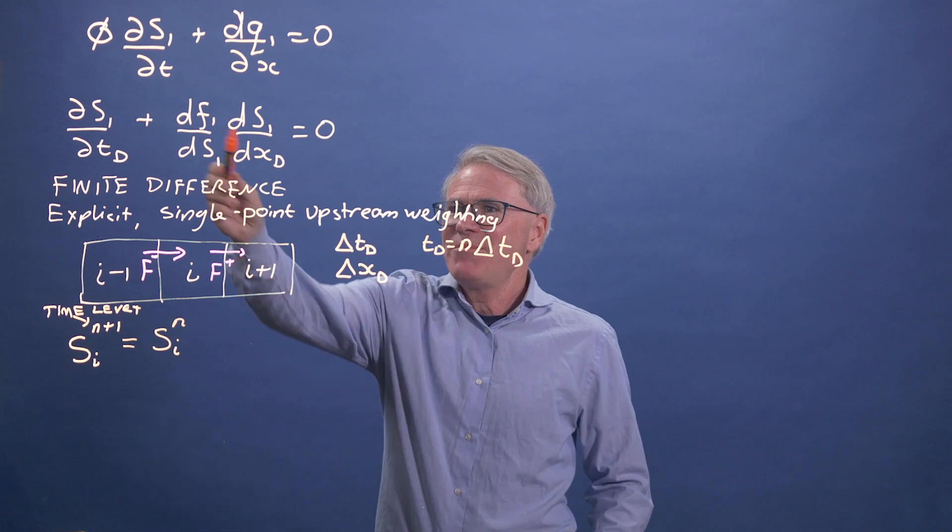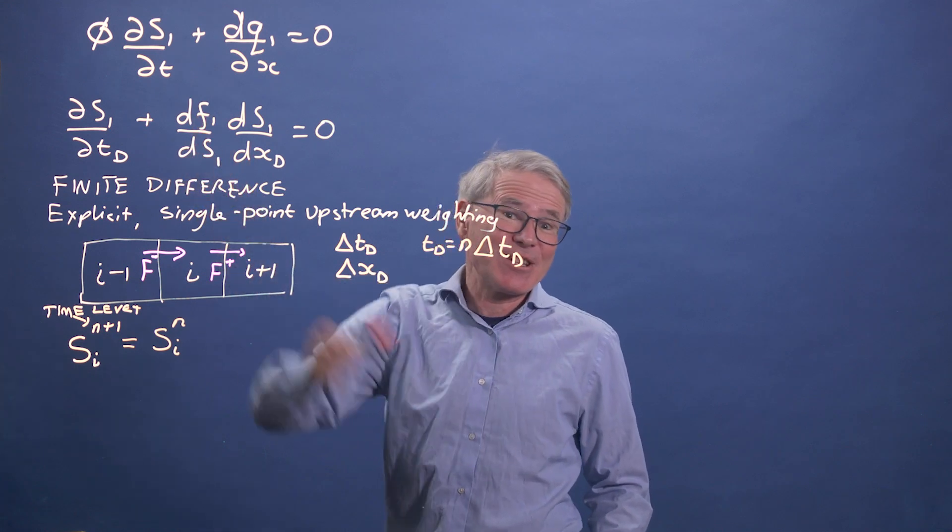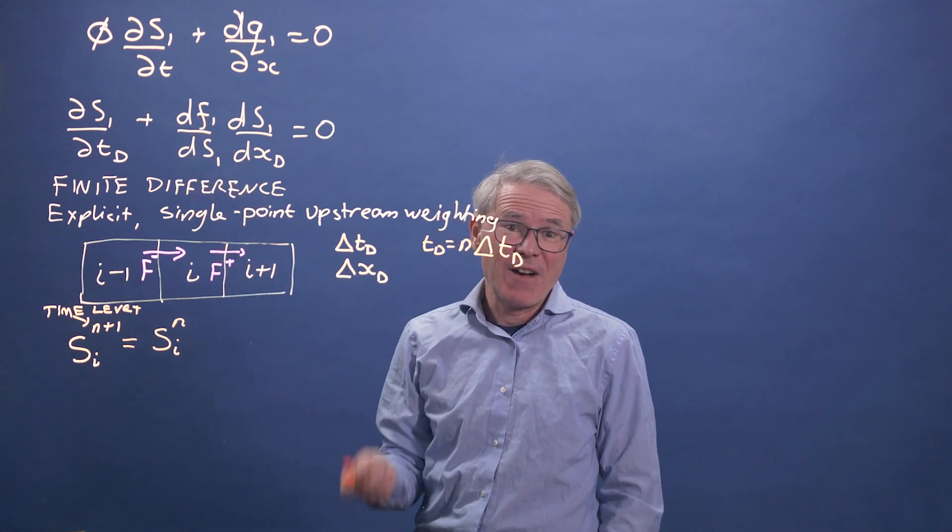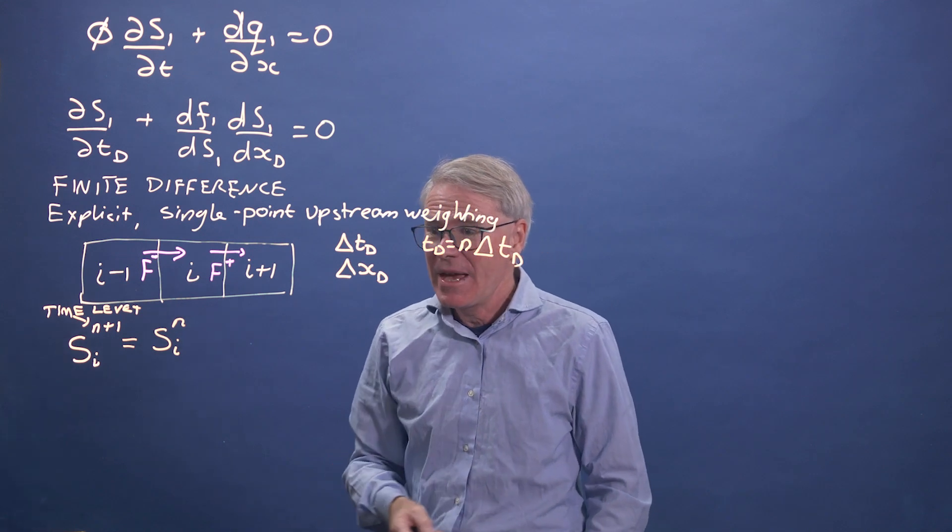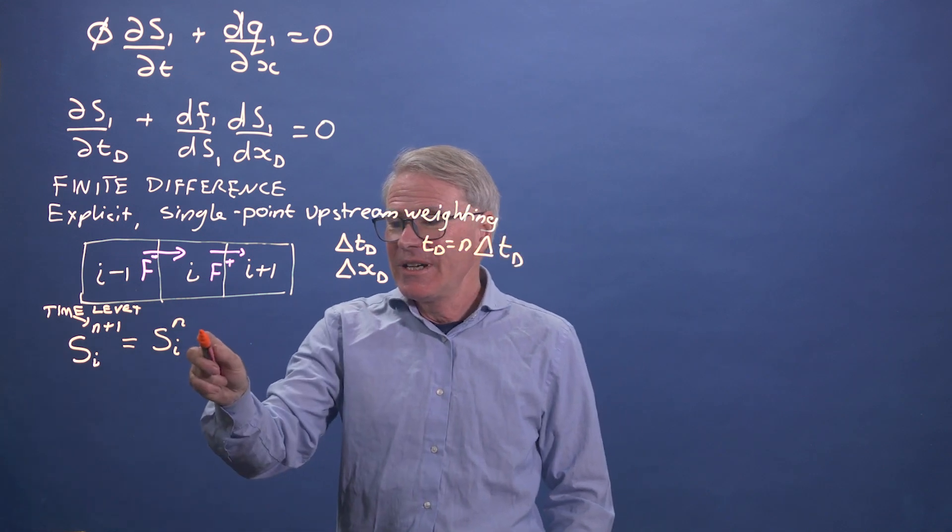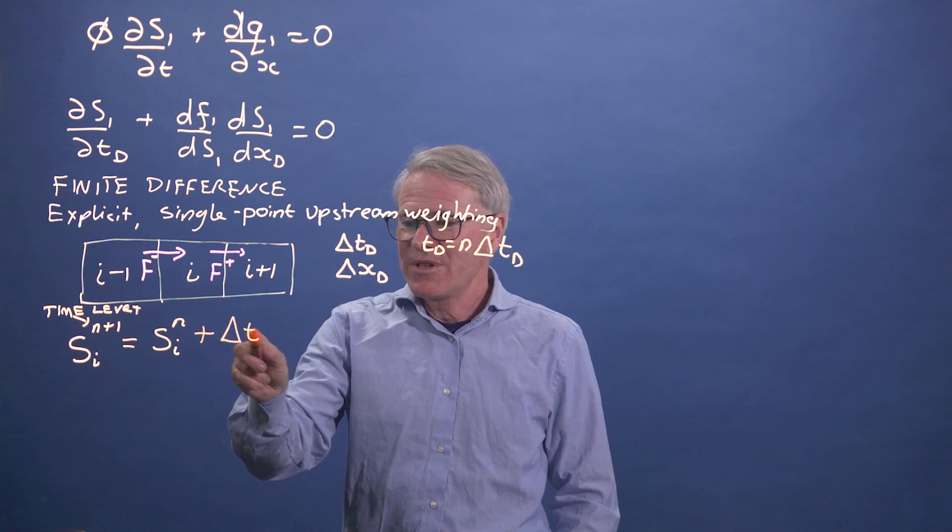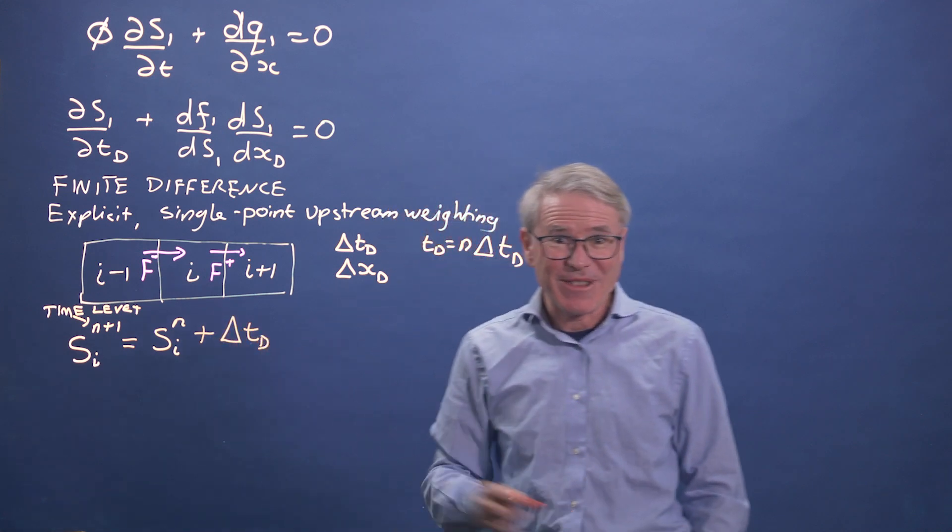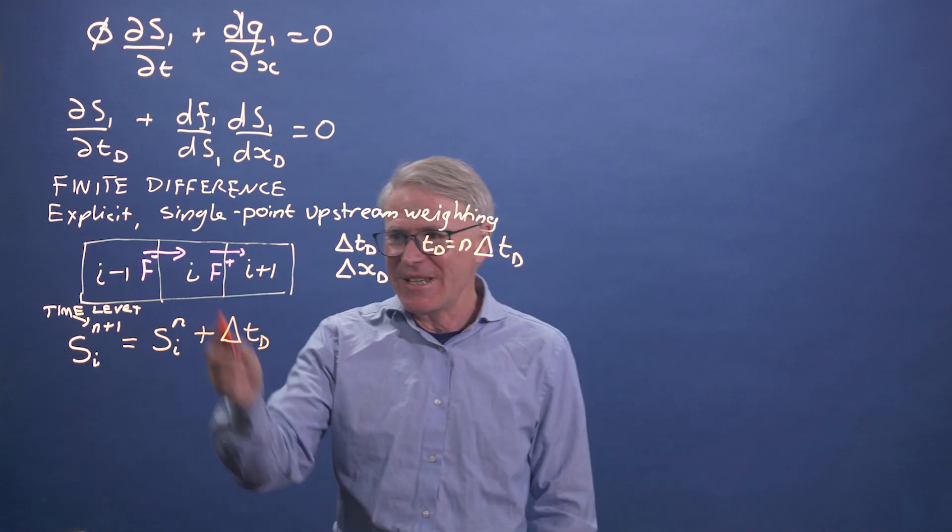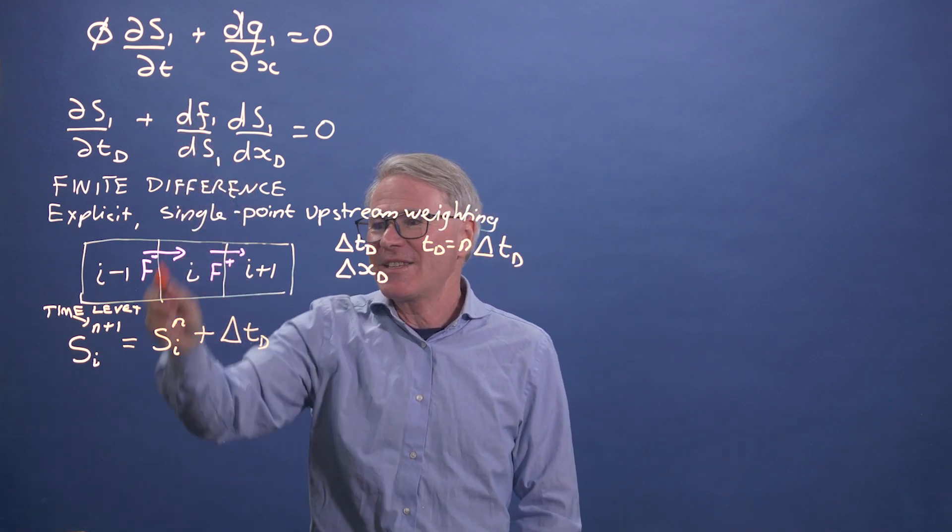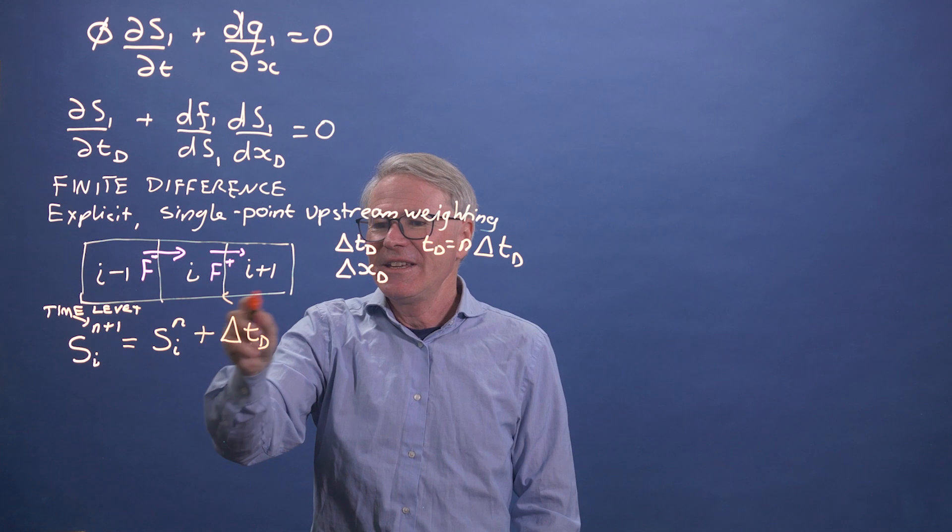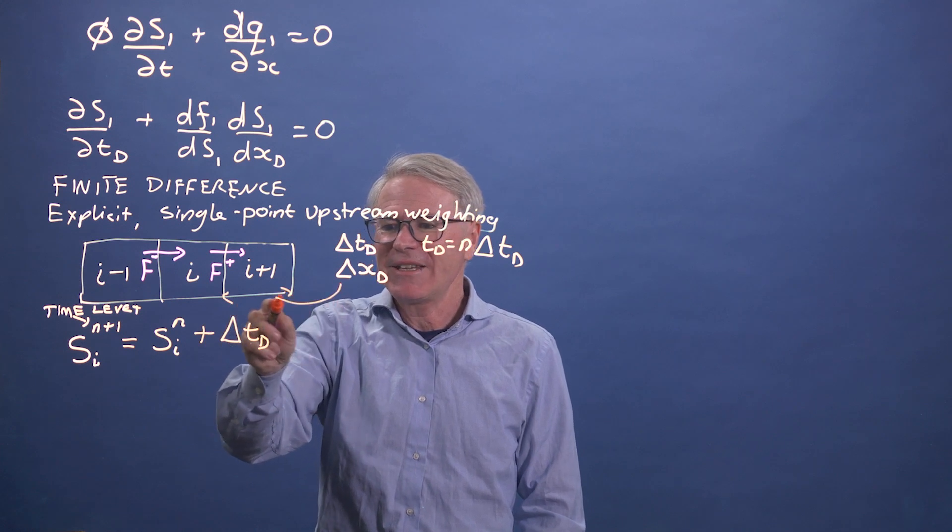And then we have basically a df by dx term here. We want to have a flux derivative. And of course, we also know that we're proportional to the time increment. The bigger the time increment, the more we're going to update. And we're going to do a df dx and the spatial increment here is delta X.